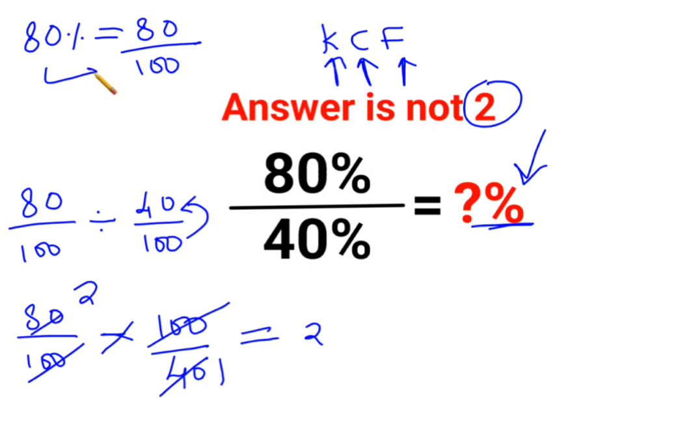See when they had given us a percentage, we have divided it by 100 to convert it into a number. Now if we have a number and we want the answer in terms of a percentage, then in that case you need to just multiply this number by what? 100. So answer for this question is supposed to be 200%.